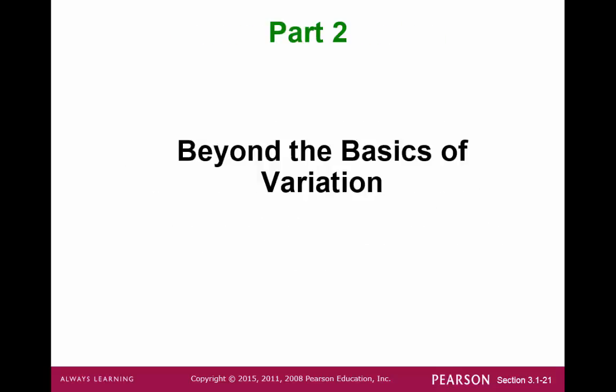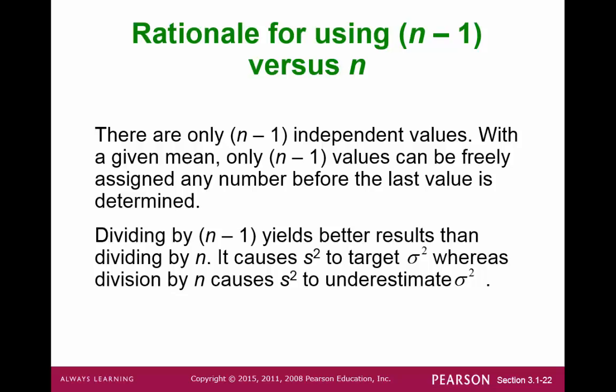Let's dive a little deeper with variation. Recall the difference between sample and population standard deviations. For the sample, instead of dividing by n, we divide by n minus 1. The main reason is that, with the mean, there are n minus 1 independent values. Since n minus 1 is less than n, dividing by a smaller number gives a larger value. When comparing the sample versus the population standard deviation, it is better to get closer to the target instead of underestimating it.